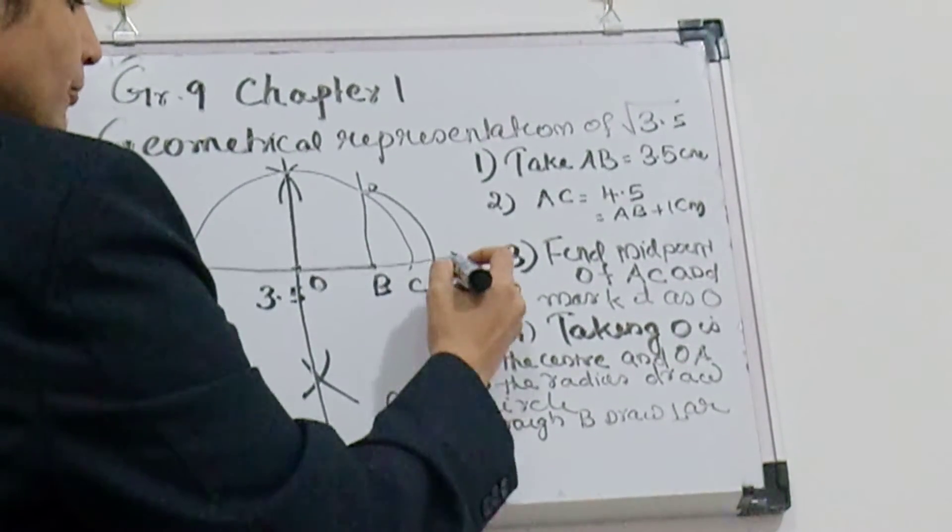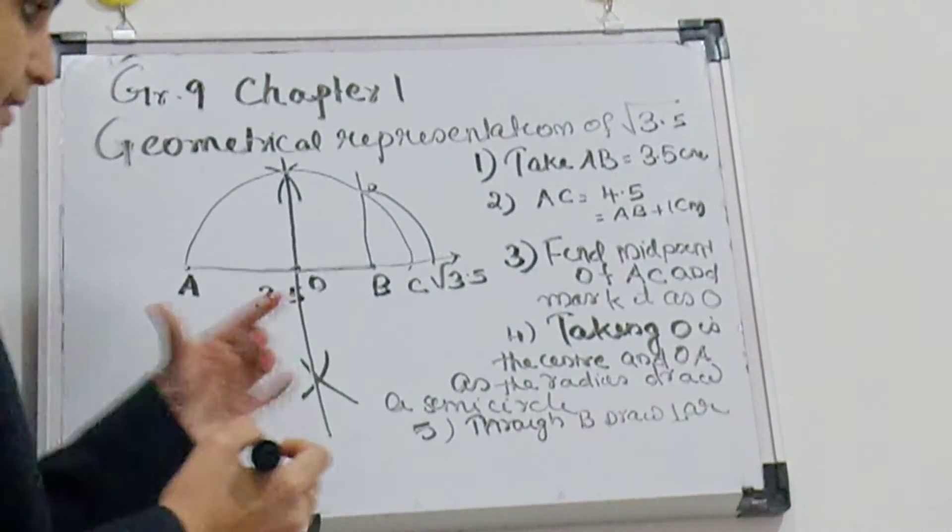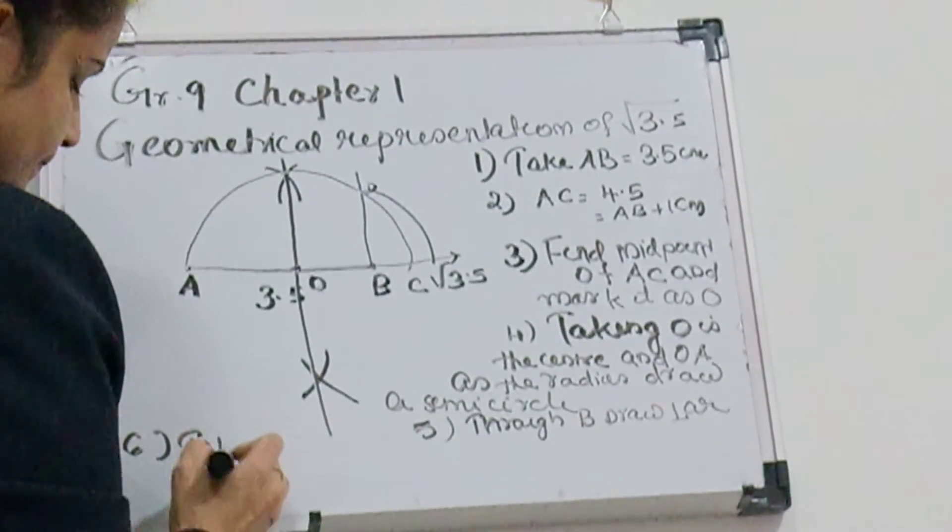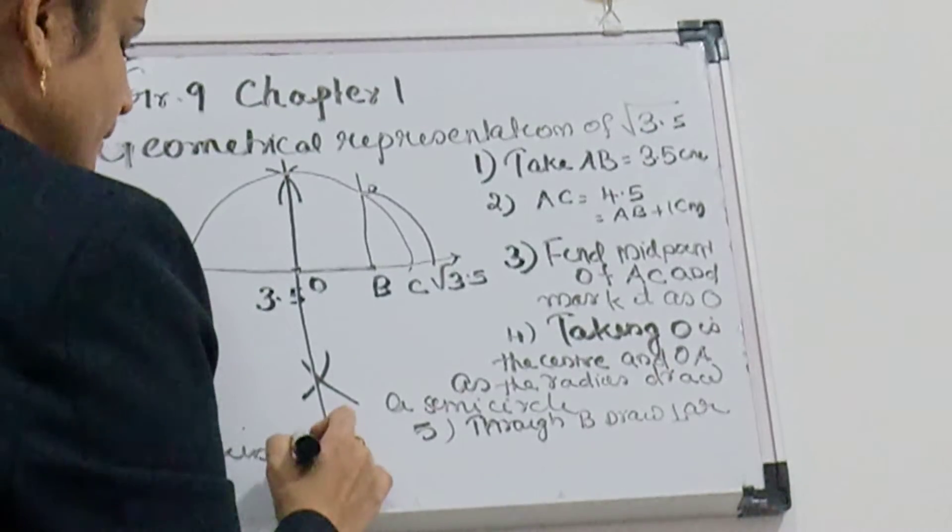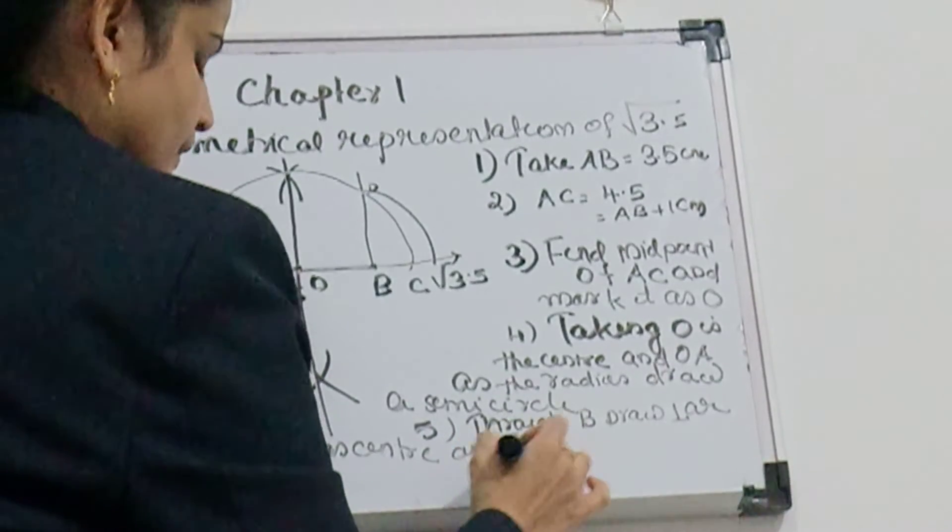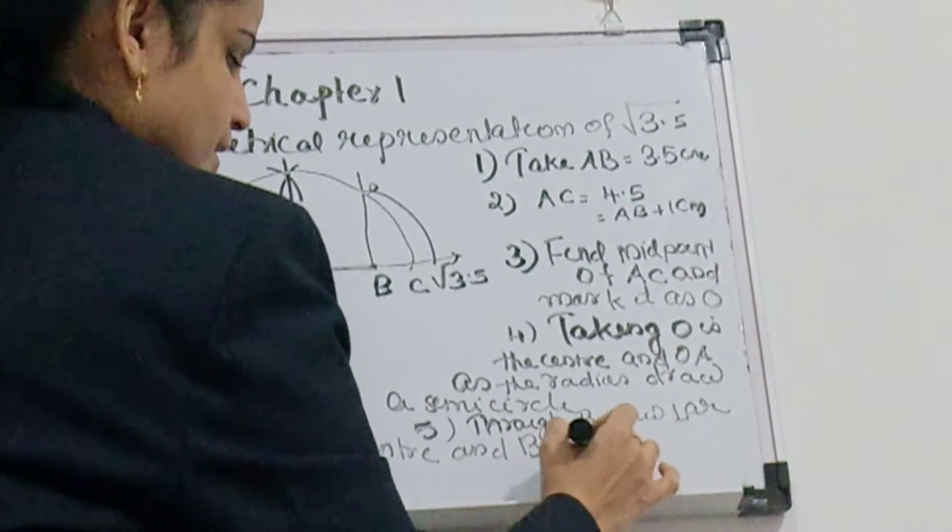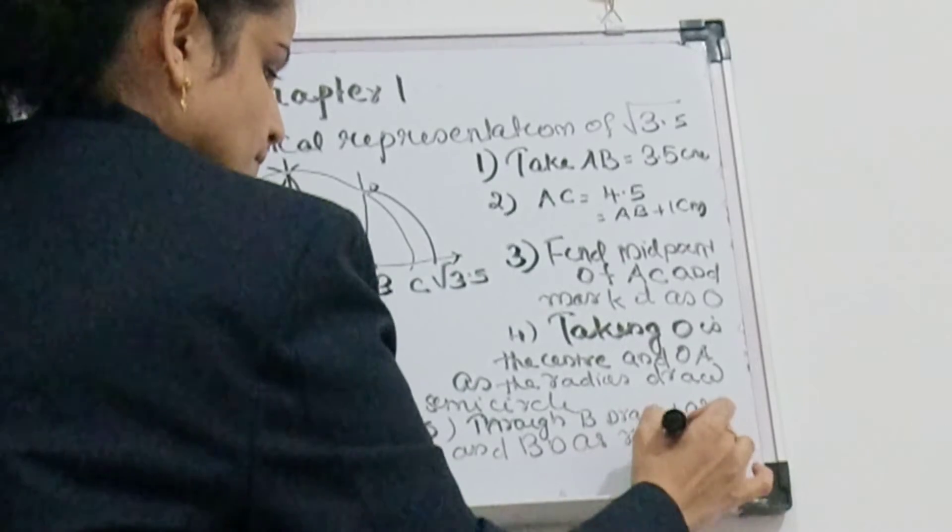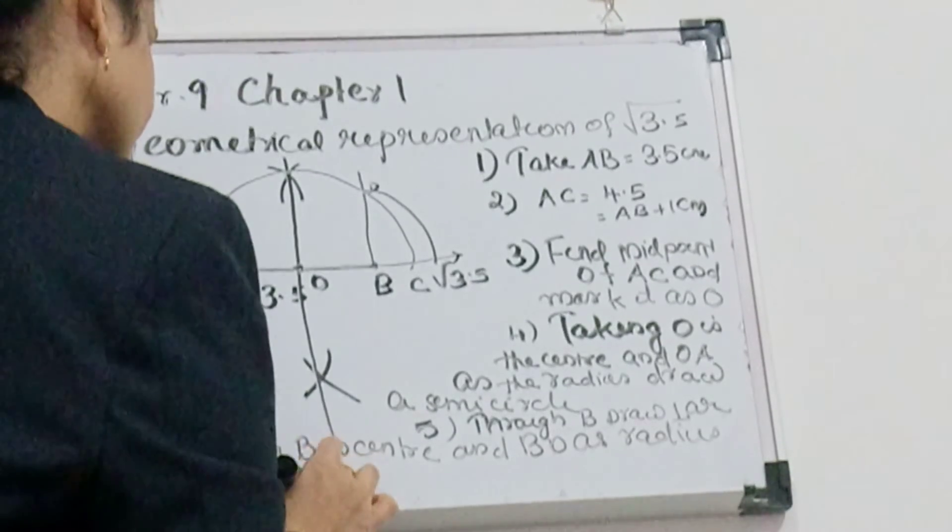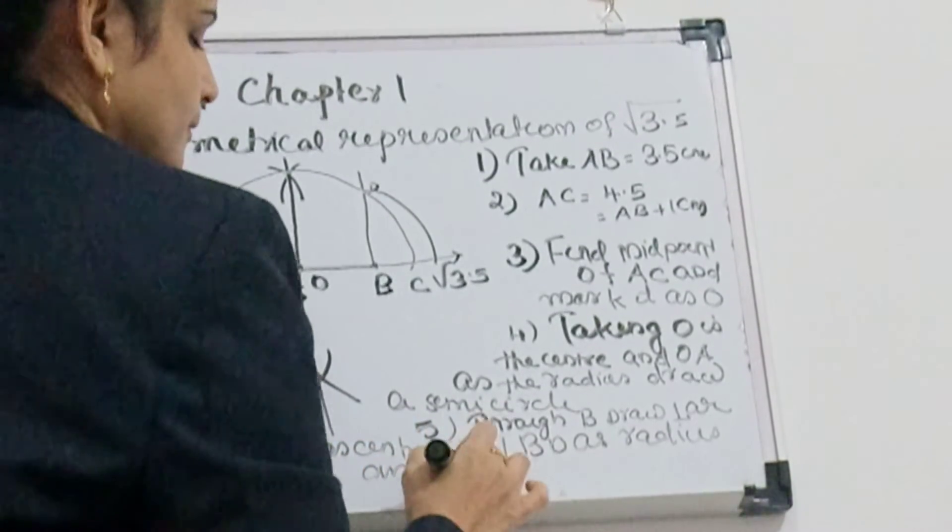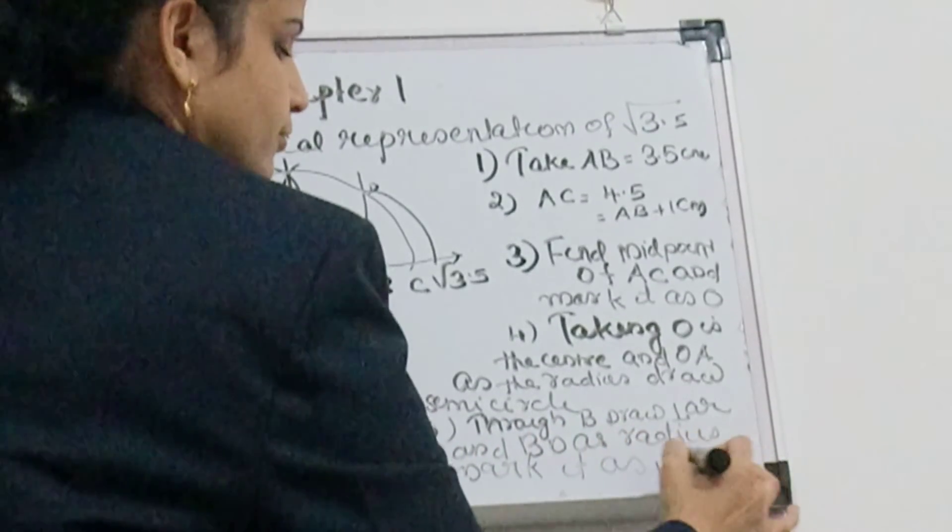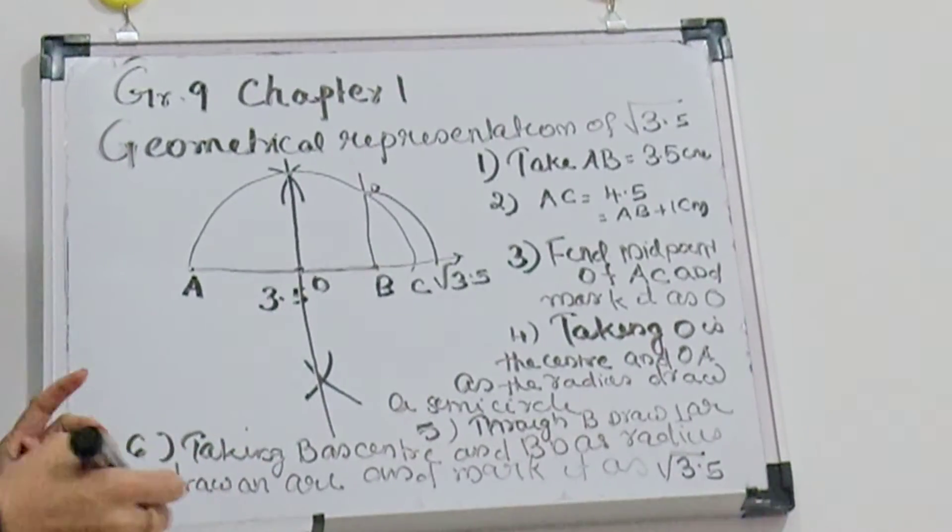So next step is taking B as center and BD as radius, draw an arc and mark it as root of 3.5. Understood? I will explain again.